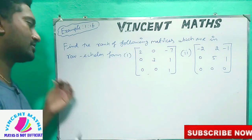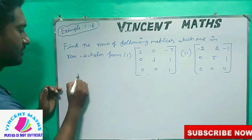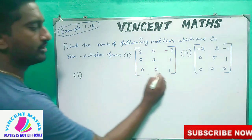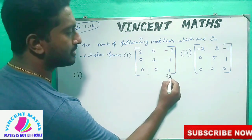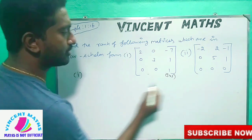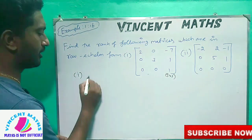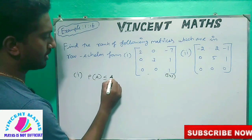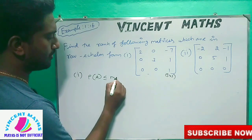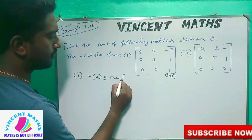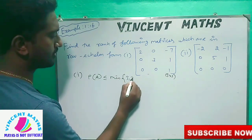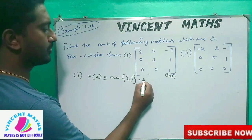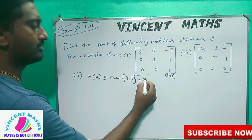Okay, now let's see the first solution. In the first solution, this is a 3 by 3 matrix. How do we write the condition? That is rho of A less than or equal to minimum of 3, 3. What does this mean? It's a value that is 3.